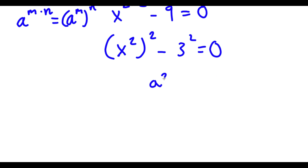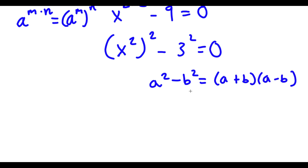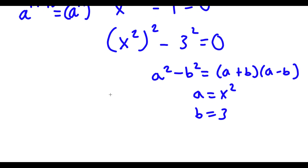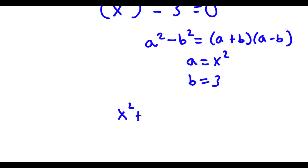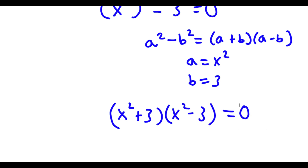If I have something in the form a squared minus b squared, this is equal to a plus b times a minus b. So in this case, a would be x squared and b would be 3. So now I have x squared plus 3 times x squared minus 3 is equal to 0.